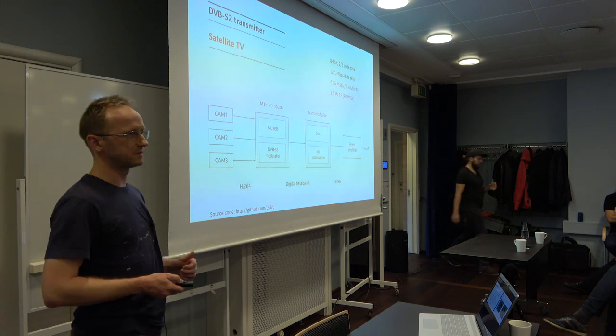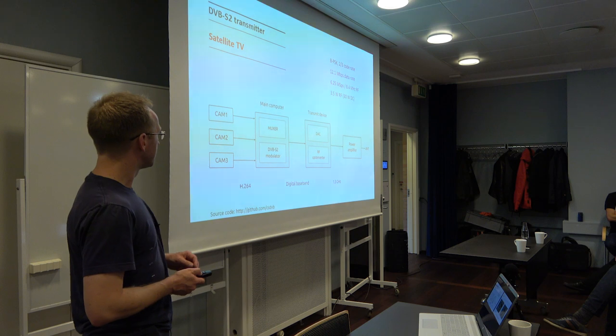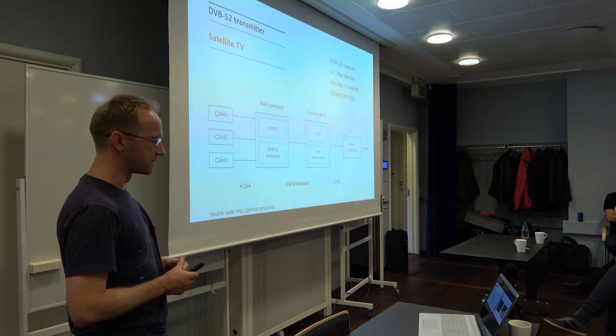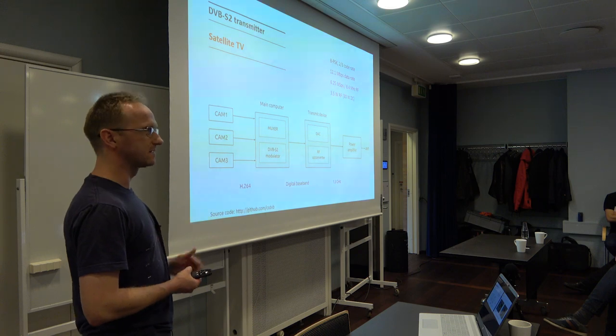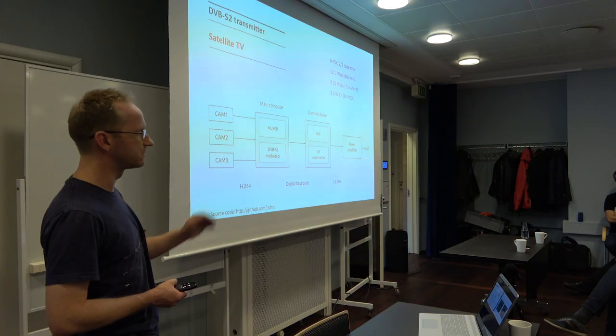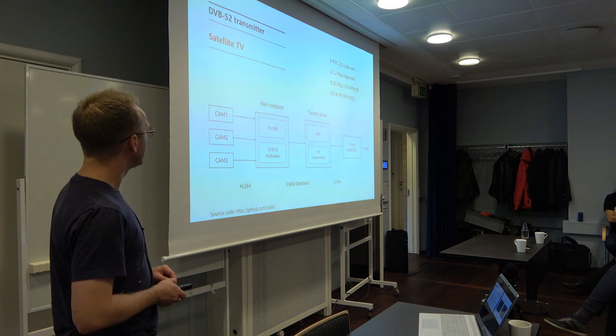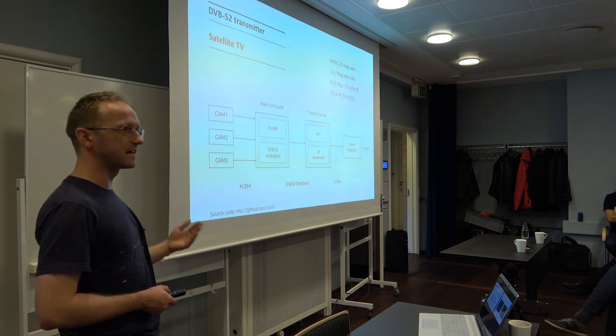Ten years later we succeeded. Basically what we did was implement a system called DVB-S2 — it's what satellite television is based on. The DVB-S2 standard is a technical specification for making a one-way transmission of digital audio and video data over a satellite link. That's exactly what we need: a flying object where we want to send audio and video one way — no network connection, no interaction, just send the video and forget about it.